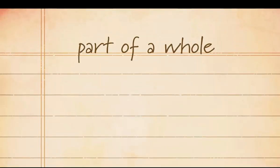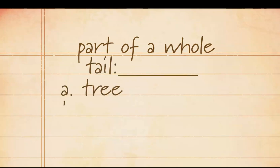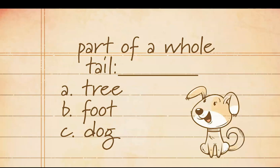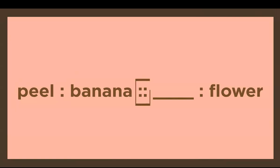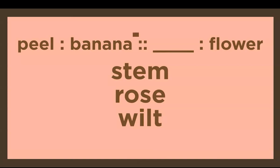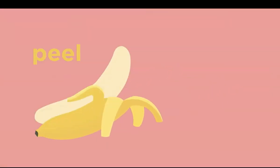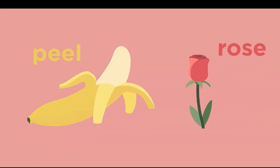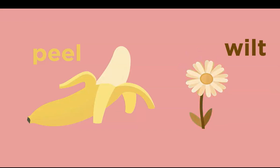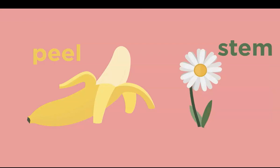Which word completes the part-of-a-whole relationship: tree, foot, or dog? A tail is not part of a tree, nor is it part of a foot. The correct answer is dog, because a tail is part of a dog. For the analogy 'peel is to banana as blank is to flower,' the correct answer is stem, not rose (which is a type of flower) and not wilt (which is an action). A stem is part of a flower, so the analogy reads: peel is to banana as stem is to flower.